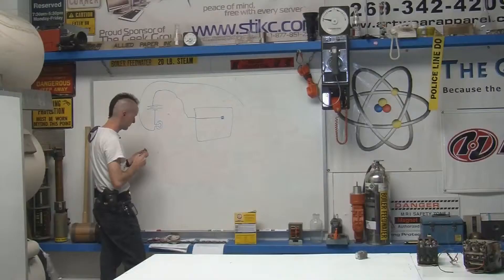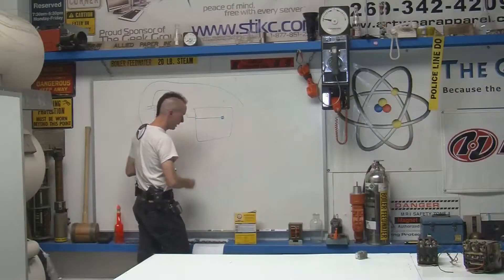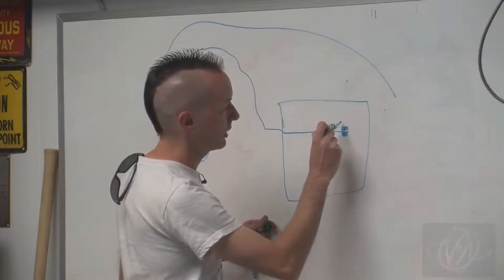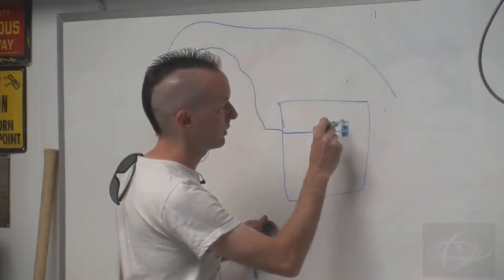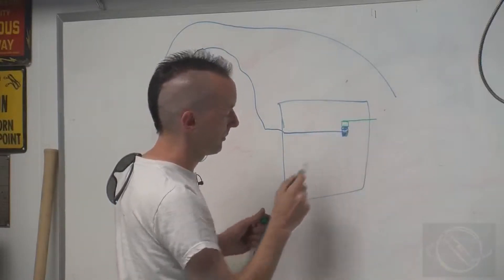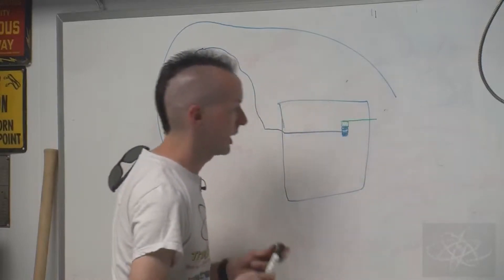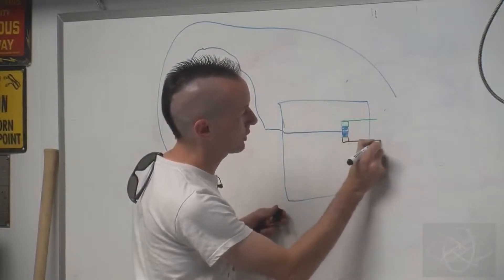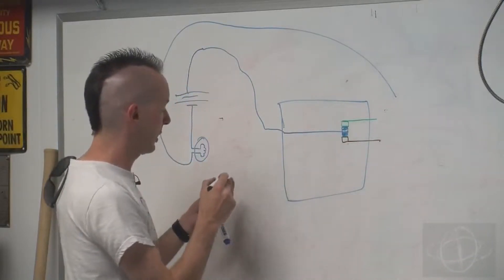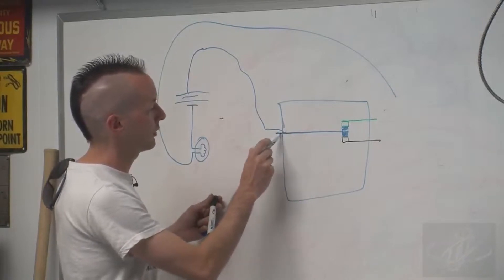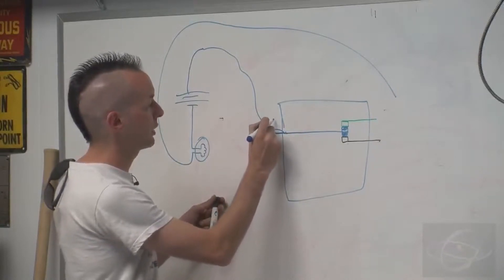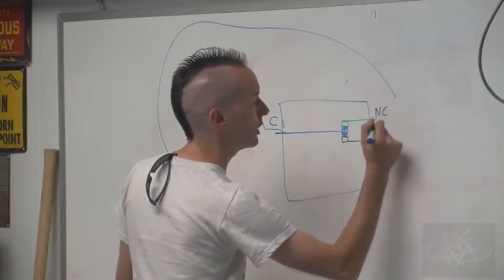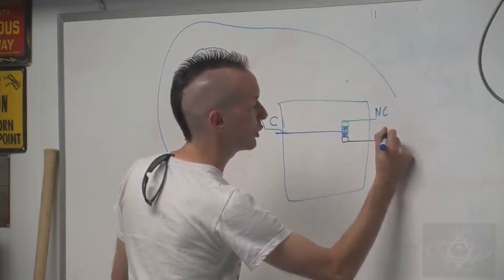Now on the other side of the relay is a contact here that comes out. And we'll do another one in black. We have the black contact down here that comes out this side. So we have three electrical connections on the relay. We have the common, we have normally closed, and we have normally open.